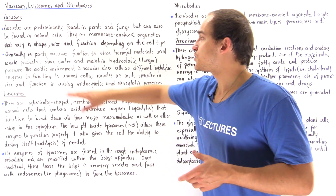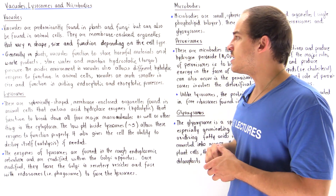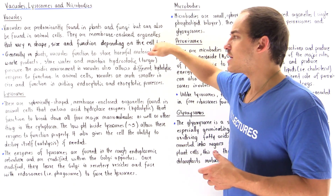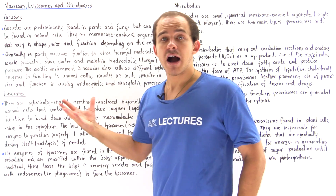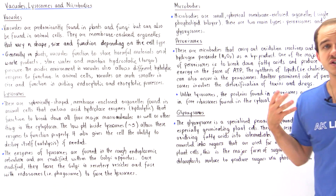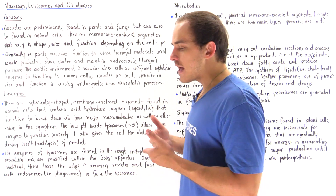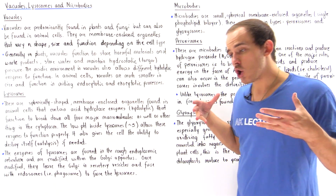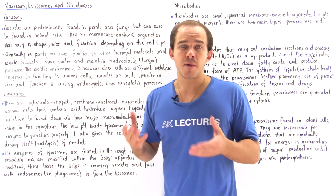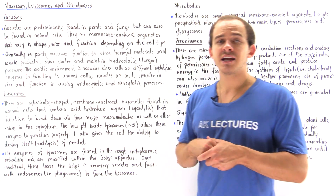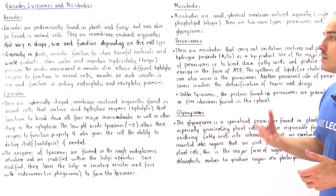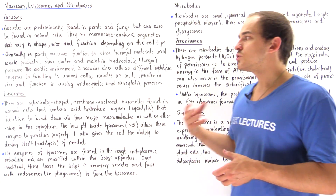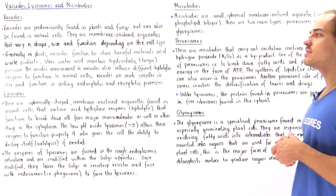Generally in plants, vacuoles function to store harmful materials and waste products, store water, and maintain hydrostatic pressure, also known as turgor pressure. The acidic environment inside plant vacuoles is a result of integral proteins found inside the phospholipid bilayer. Those proteins pump H+ ions into the vacuole, increasing acidity and lowering the pH, which gives hydrolytic enzymes the ability to break down the waste products stored inside vacuoles.